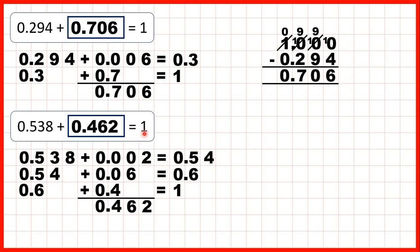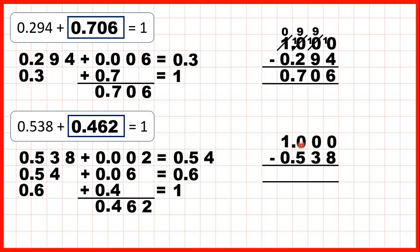Now for this question we could have solved it by working out 1 minus 0.538. Now 1 is the same as 1.000. We can copy down the decimal point. Now we can't do 0 minus 8, so we exchange, then exchange again, and again. Now 10 minus 8 is 2, 9 minus 3 is 6, 9 minus 5 is 4, and 0 minus 0 is 0. So again, we get our missing number.